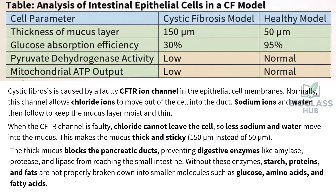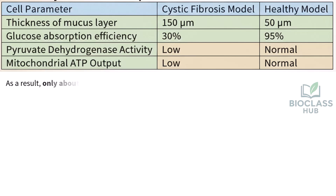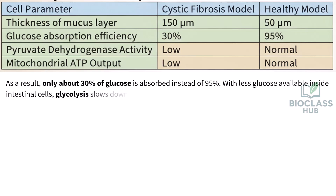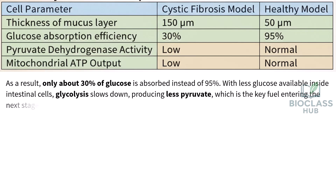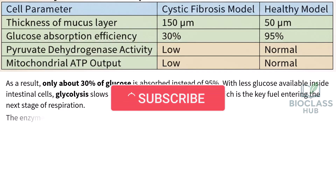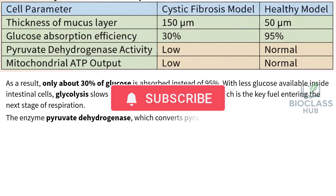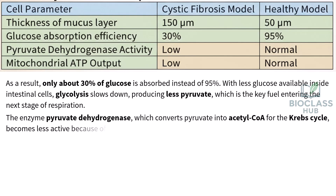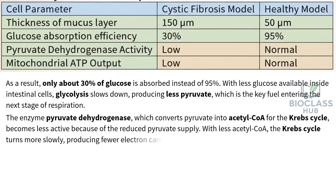As a result, only about 30% of glucose is absorbed instead of 95%. With less glucose available inside intestinal cells, glycolysis slows down, producing less pyruvate, which is the key fuel entering the next stage of respiration. The enzyme pyruvate dehydrogenase, which converts pyruvate into acetyl-CoA for the Krebs cycle, becomes less active because of the reduced pyruvate supply. With less acetyl-CoA, the Krebs cycle turns more slowly, producing fewer electron carriers for the electron transport chain.